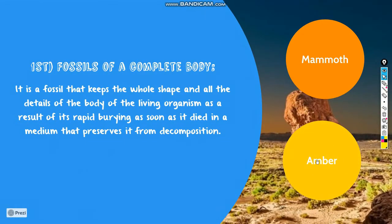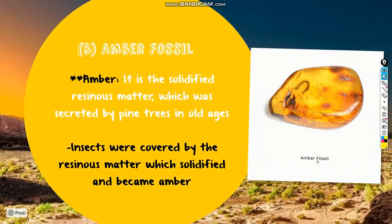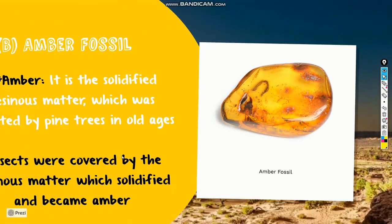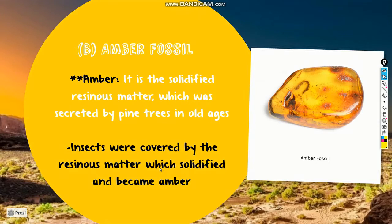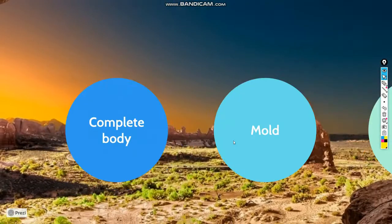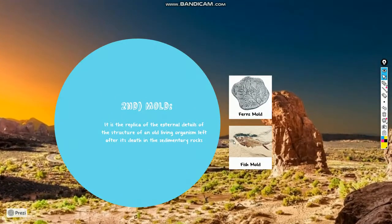Another complete body fossil is the amber fossil. Amber is a solidified resinous matter secreted by pine trees in old ages. Small insects were covered by this resinous matter, which solidified and became amber, trapping the insects inside. These are also complete body fossils.